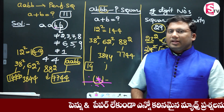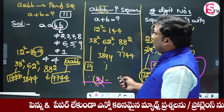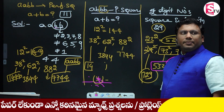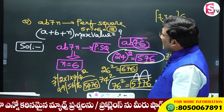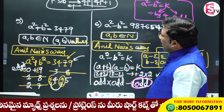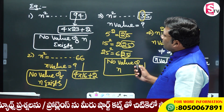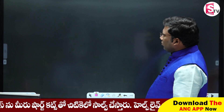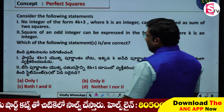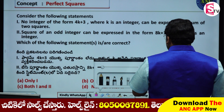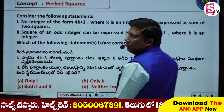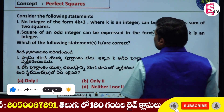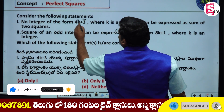I hope this is clear. Now we will try some questions in the exam. Let's look here. First question: one perfect square, one ordinary square, 4k plus 3 form.